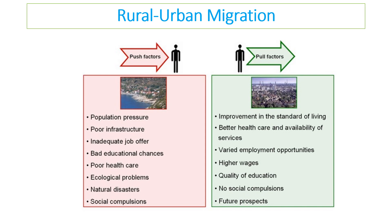There are lots of push factors pushing people out of rural areas and pull factors pulling people into urban areas. Push factors include inadequate jobs in the countryside, bad education because fewer schools are accessible, and poor healthcare. Pull factors include improved standard of living, better healthcare, increased wage opportunities, better employment opportunities, more schools to choose from, and therefore hopefully higher education quality and increased future prospects.